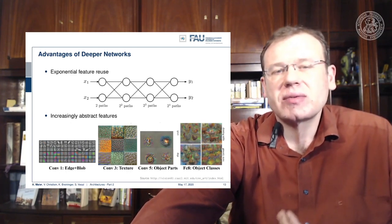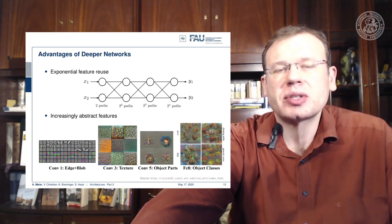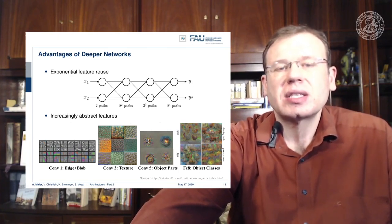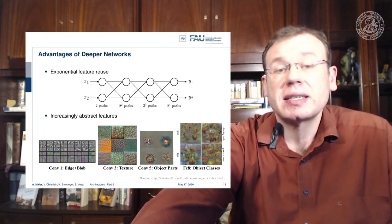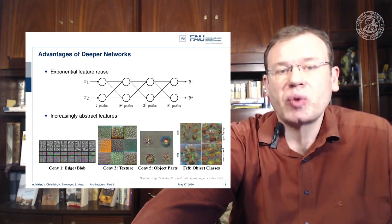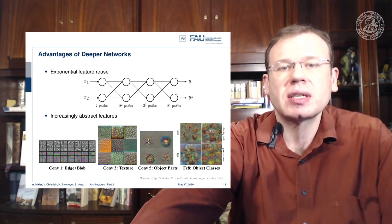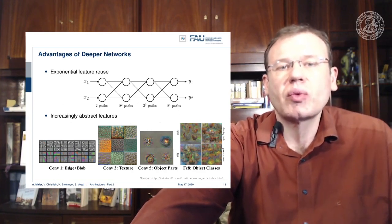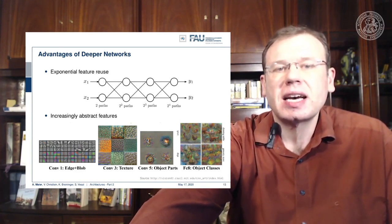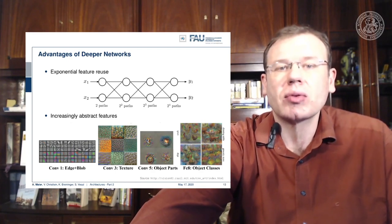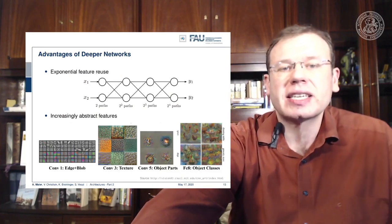Then we also get these visualization results that they increasingly build more abstract representations. We somehow see a kind of modularization happening, and we think that deep learning works because we are able to have different parts of the function at different positions. We are disentangling somehow the processing into simpler steps, and then we essentially train a program with multiple steps that is able to describe more and more abstract representations.